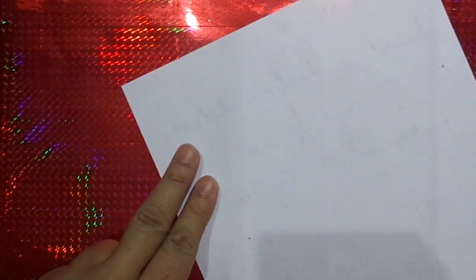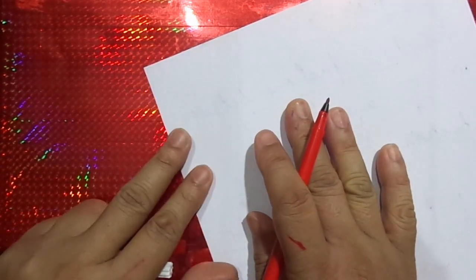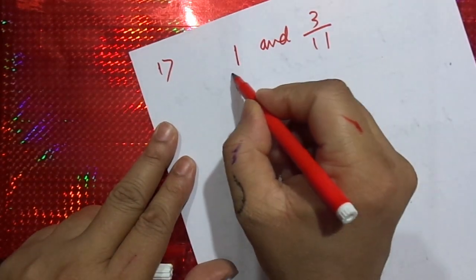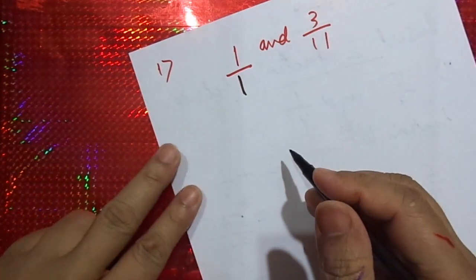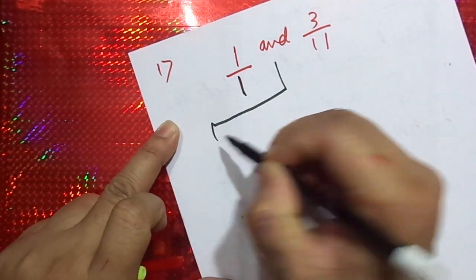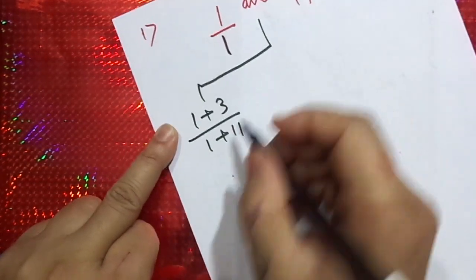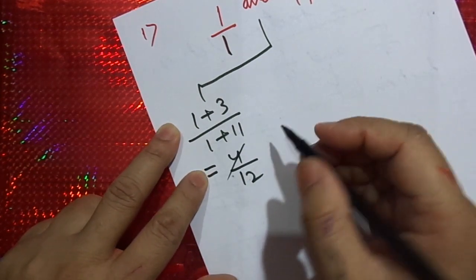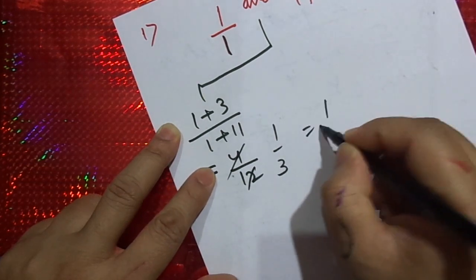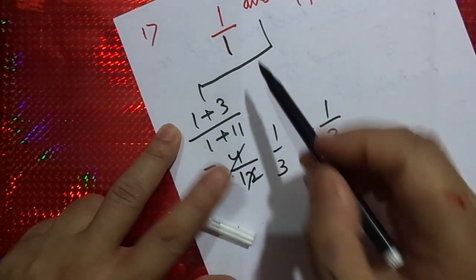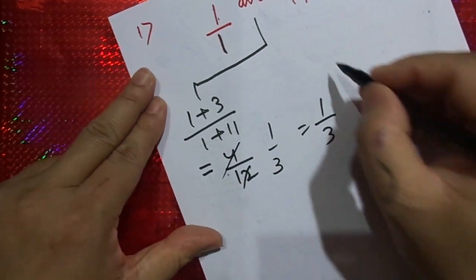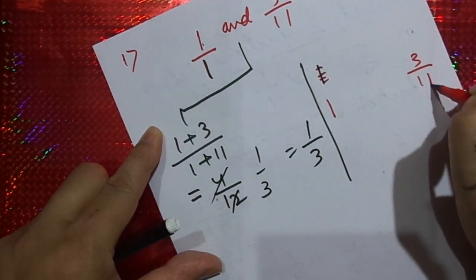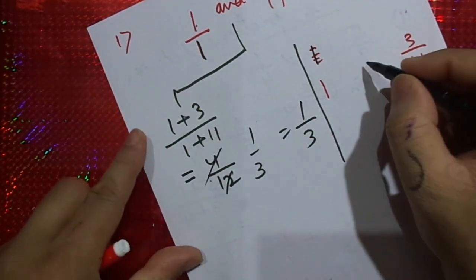For number 1 of question 9, we have 1 and 3 by 11. They ask to insert two fractions. Since 1 can be written as 1 by 1, the first fraction between them is 1 plus 3 by 1 plus 11, which equals 4 by 12. Simplifying, that is 1 by 3. So 1 by 3 is a fraction between 1 and 3 by 11. So far our number line looks like: 1, then 1 by 3, then 3 by 11.